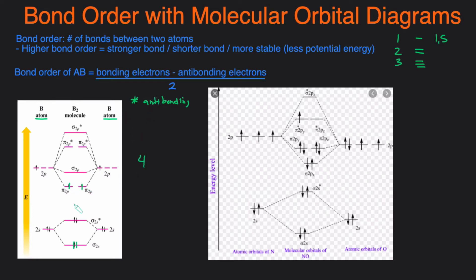Yep so we have four bonding electrons and then antibonding electrons are going to be the ones with the star. So one antibonding, two antibonding. So four minus two then divide that by two. So that would be two divided by two which would be a bond order of one. So that means there is a single bond between the borons in the B2 molecule.